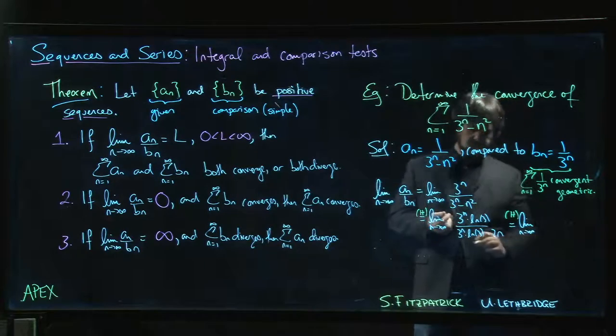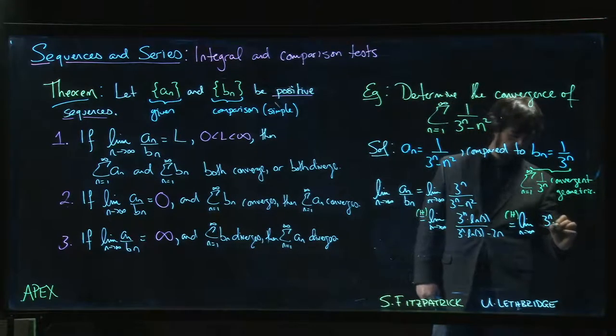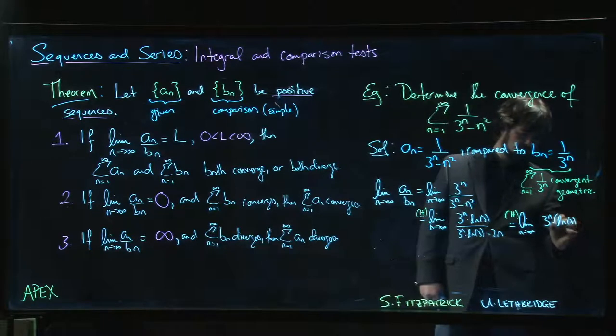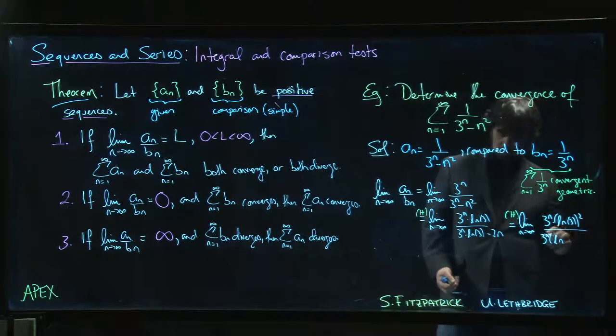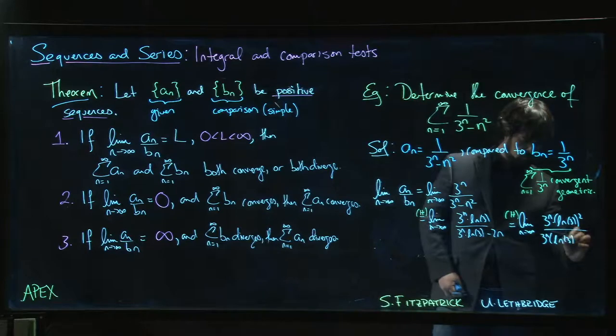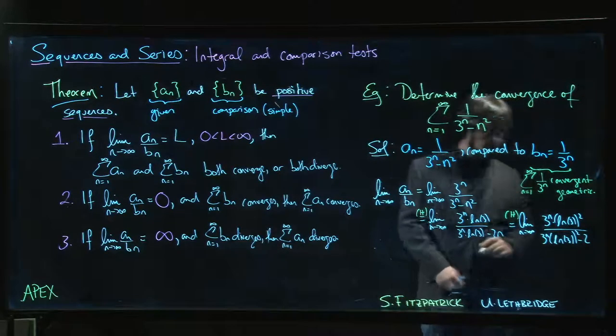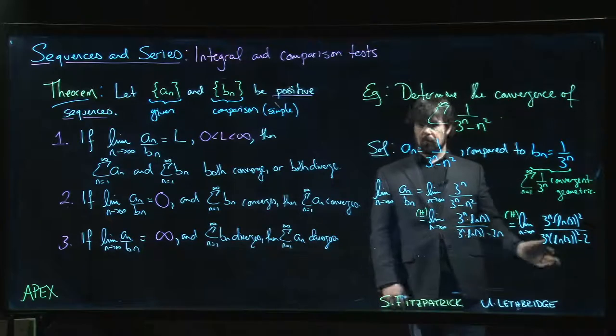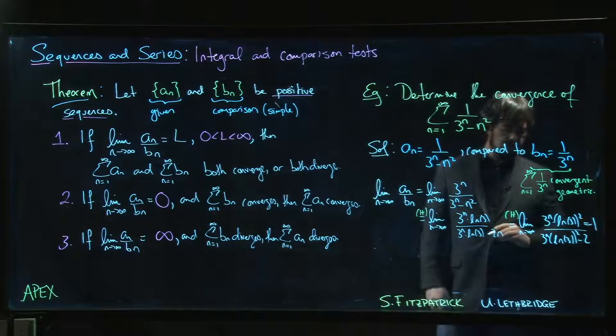Limit n going to infinity: 3 to the n times log 3 squared - don't worry about it, it's a constant - over 3 to the n log 3 squared minus 2. Let n go to infinity - minus 2 doesn't matter, right? We get 1 in the limit.